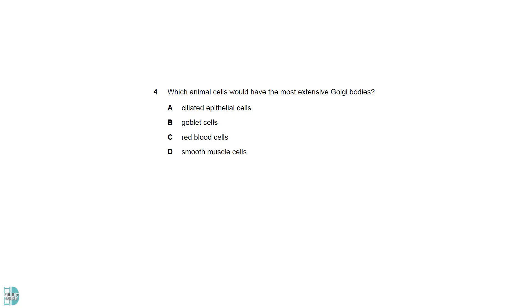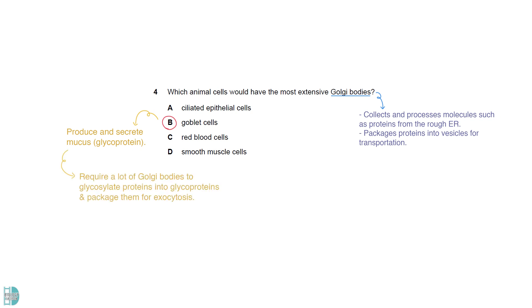The Golgi body collects and processes molecules such as proteins from the rough ER. It also packages them into vesicles for transportation to other parts of the cell or out of the cell. Goblet cells function is to produce and secrete mucus, which is a glycoprotein. So, they require a lot of Golgi bodies to glycosylate proteins into glycoproteins and then package them for exocytosis.